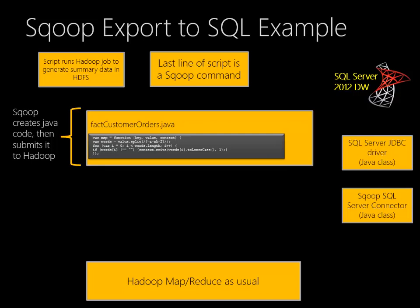Let's consider a conceptual example of how Sqoop works. Say we have a job to generate some summary data from our HDFS system. For example, maybe we have web logs from our web server for every single request made to the web server, but we don't want to store all that in the data warehouse — it's too much. So we store it in HDFS, and we have a script that runs a Hadoop job to generate summary data, maybe daily totals by page. In the last line of that script, we might have a Sqoop command.